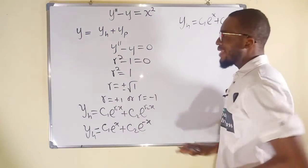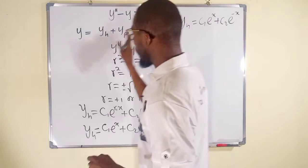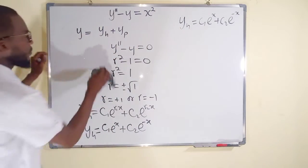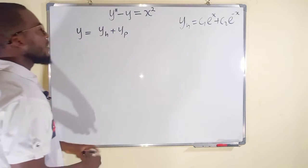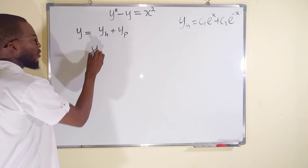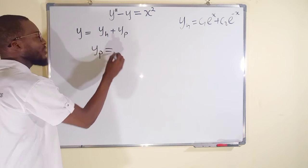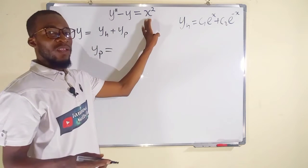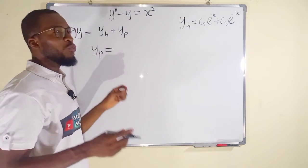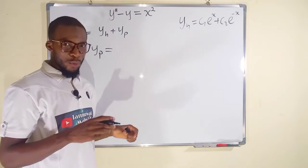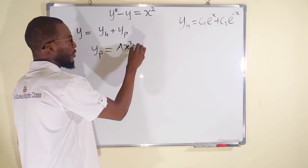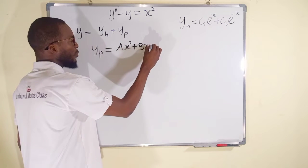Now let us find the solution for y sub p. It depends on the nature of the right hand side. If you have a quadratic function, then you set y sub p to be a quadratic polynomial. The general form is a x squared plus b x plus c.